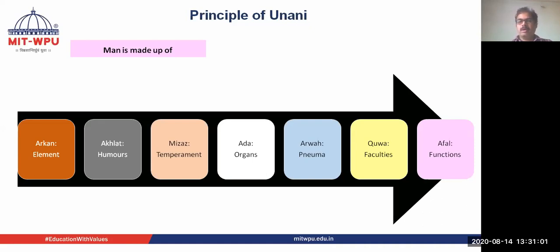Akhlaq refers to humors. Mizaj means temperament. Adha means organ. Arva means pneuma or the spirit. Quwa means faculties, and Afaal means functions.